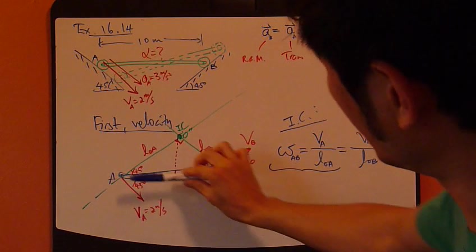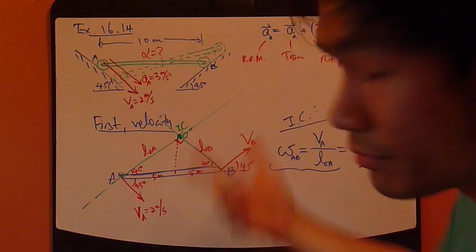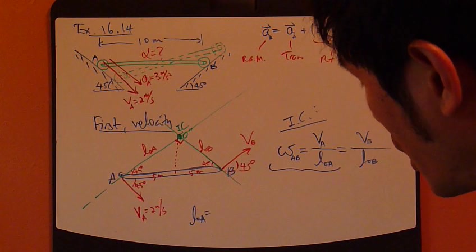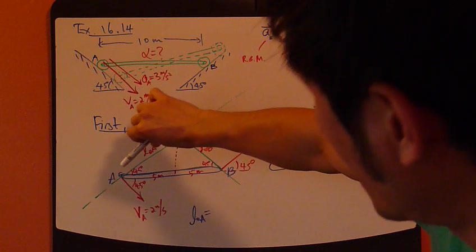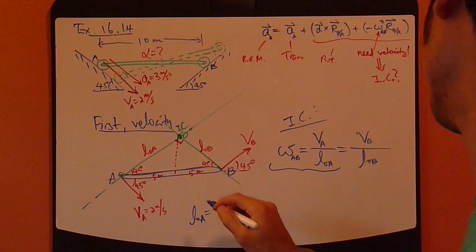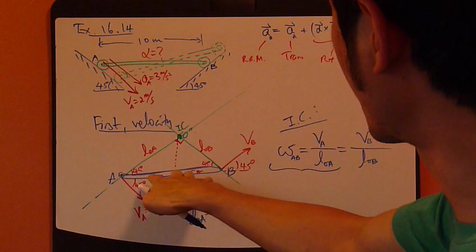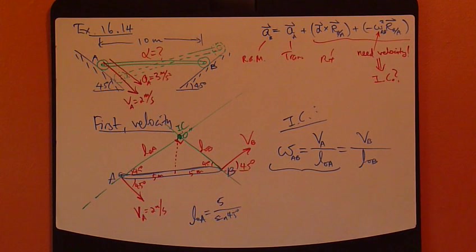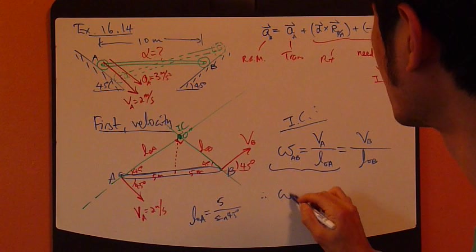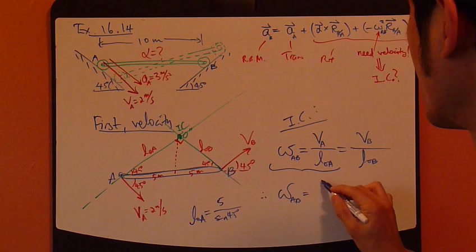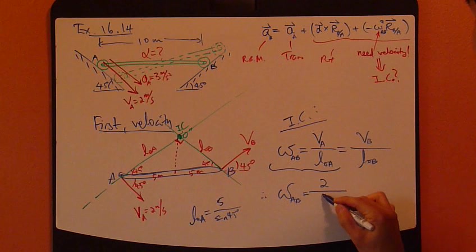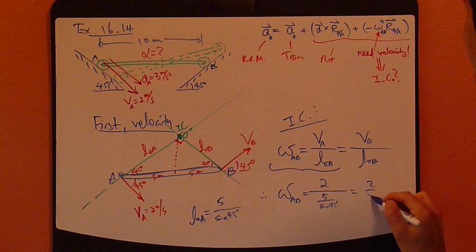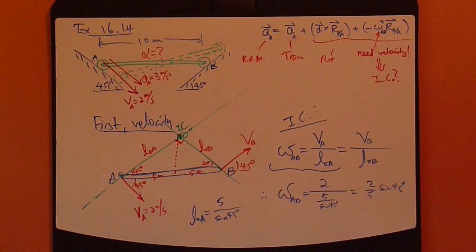Well, you know that this is 5 meters and then 45 degrees. So it can be figured out quite easily. So LOA equals, what is it? So you have either sine or cosine, it doesn't matter. So this is LOA cosine, so that would be 5 meters sine 45 degrees. You can keep it as it is, it doesn't matter. So omega AB equals VA, which is 2 meters per second divided by LOA. So 5 divided by sine 45 degrees. So let's bring it up there. So 2 over 5, sine 45 degrees.